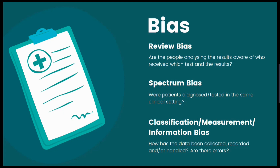There could also be spectrum bias, which is the effect on the results if participants have been diagnosed or tested in different settings — for example, some at a hospital and others at a GP practice. Finally, we have classification bias, also known as measurement or information bias. This is where errors occur in how the data is recorded, handled and/or collected.